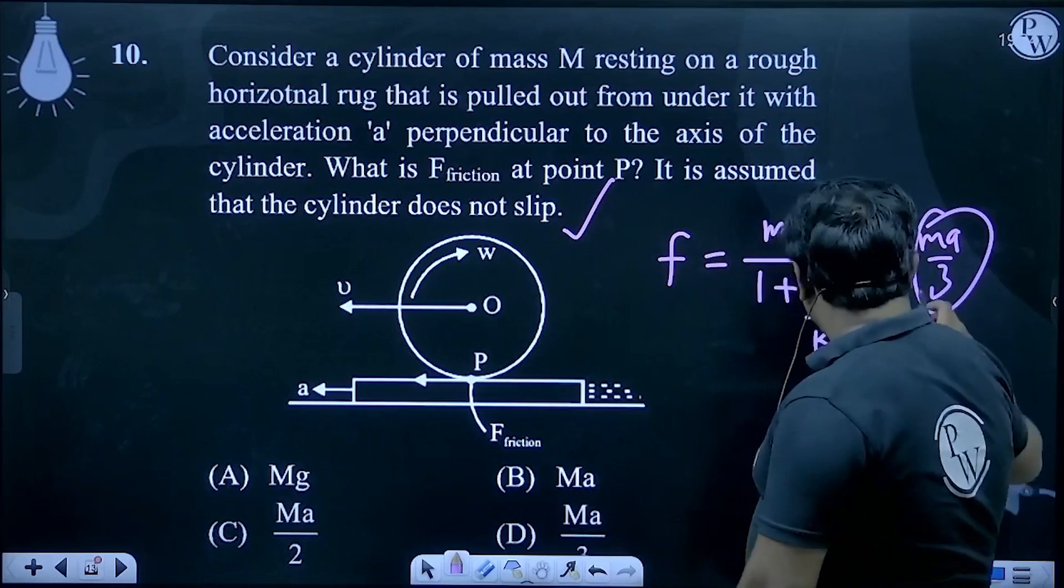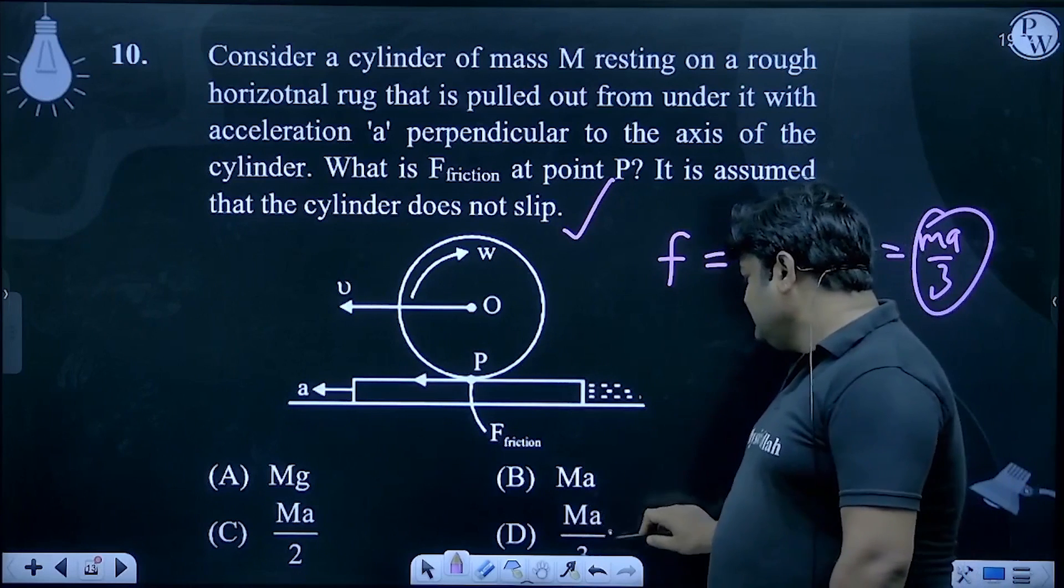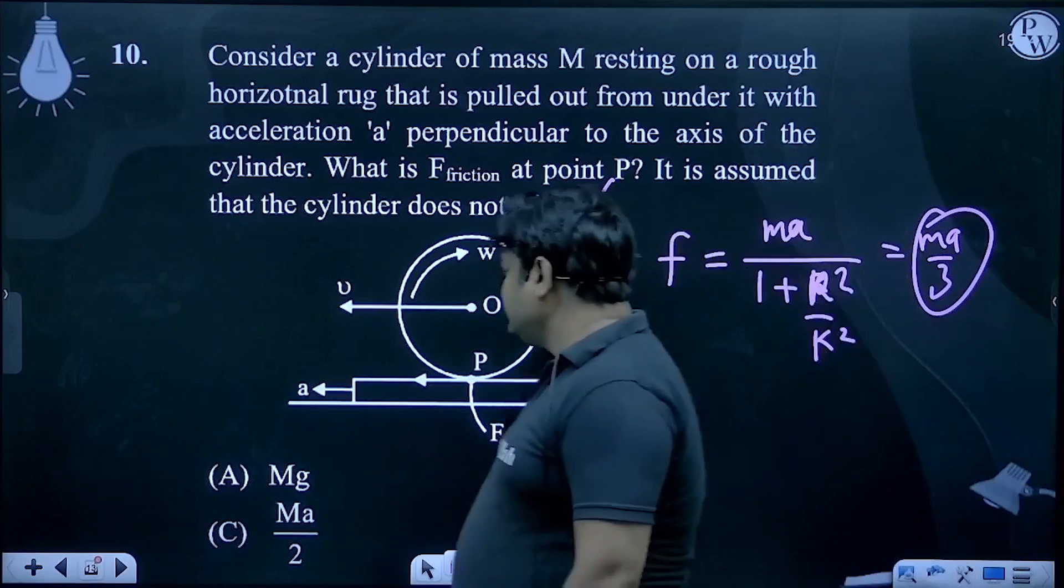This is extreme condition. This is A 3 plus R. So this will be correct. MA/3 will be correct.